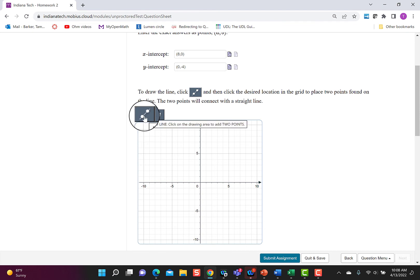Once again to graph, I want to activate the line so I click on it, it turns red, and I'm going to go over to 8, 0, and then I'm going to go over to 0, negative 4. When I click the second point you can see it brought the line in.